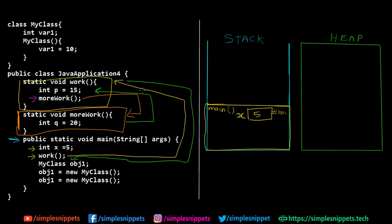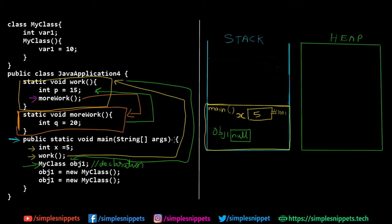Up until now everything is happening inside the stack — methods are put on top of stack and local variables are also created in the stack. Now we are creating an object: MyClass obj1 — but we're just declaring it, not using the new keyword. So inside the stack frame of the main method, obj1 is created, and right now it has null because we haven't yet used the new keyword to allocate memory and actually create the object.